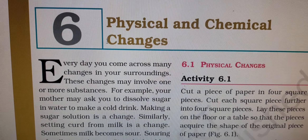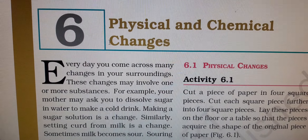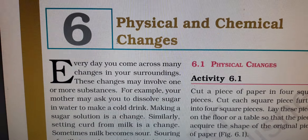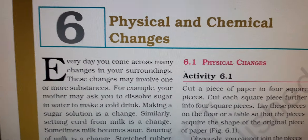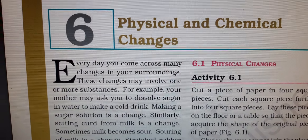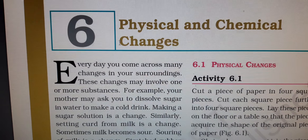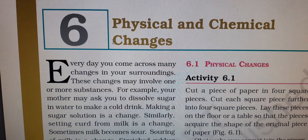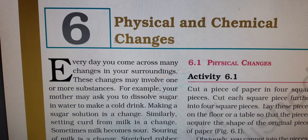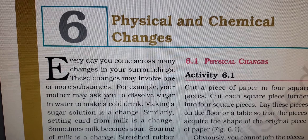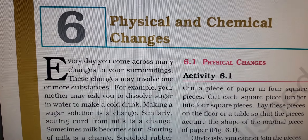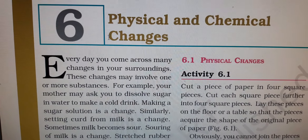The leaves change color and fall off from the trees. Leaves are usually green and after that they change their color — they become yellowish and they fall from the trees. Rice softens on cooking; when you cook rice it gets soft.